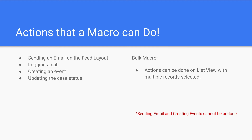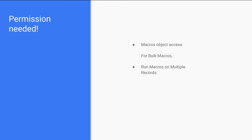In this section we are seeing the permissions needed to run a macro. If a user only needs to run a macro, they need Read access on the Macro object. If a user needs to create a macro, they need Create access at the object level. There is also a bulk macro permission required at the profile level called 'Run Macros on Multiple Records,' which is a system permission required to run bulk macros.